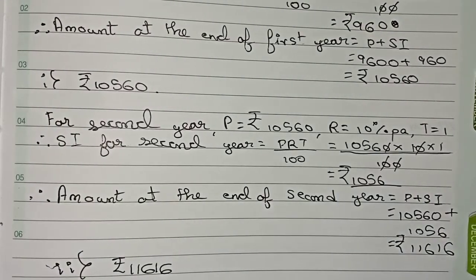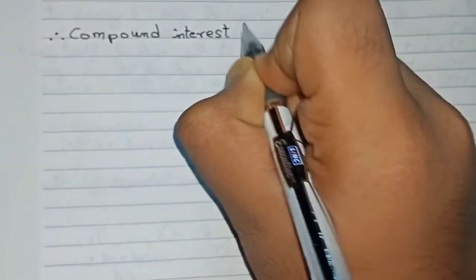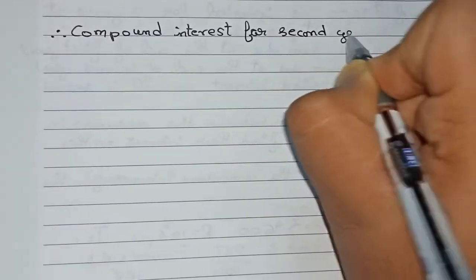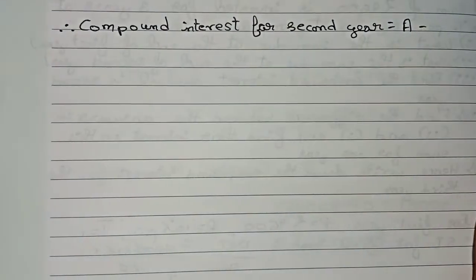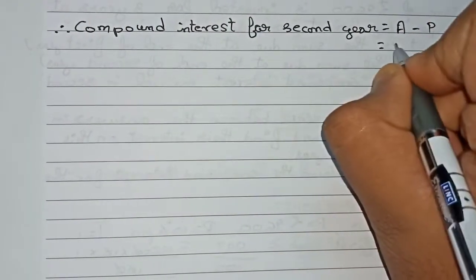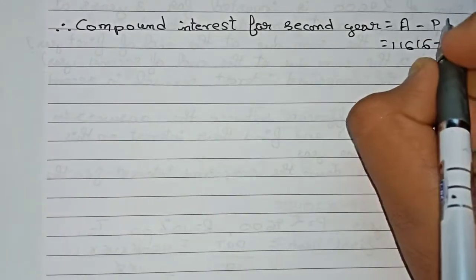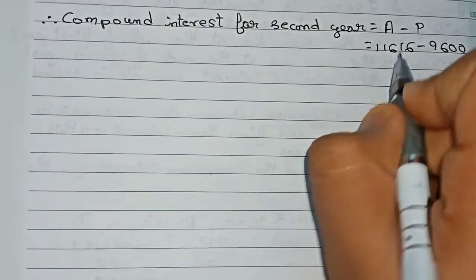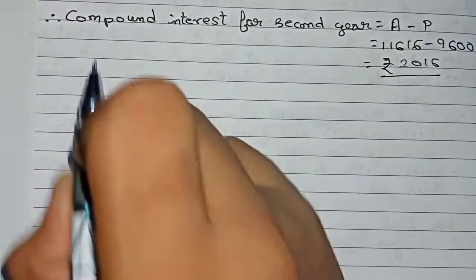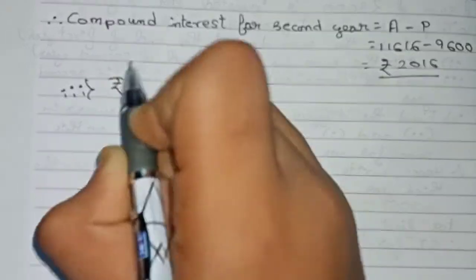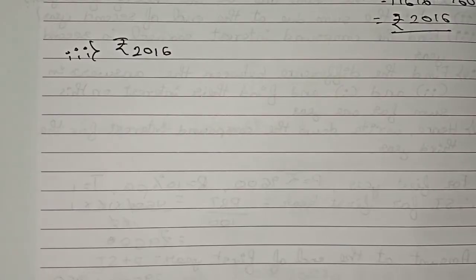Now to find the compound interest up to the second year: the formula is amount minus the original principal from which we started. So it is ₹11,616 minus the original principal ₹9,600, which gives ₹2,016. Therefore this is the compound interest up to the second year, and the answer for question number three is ₹2,016.